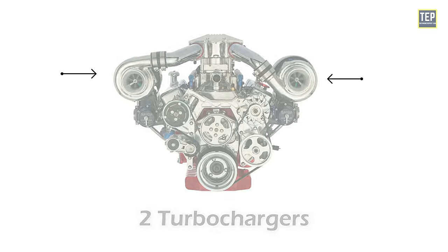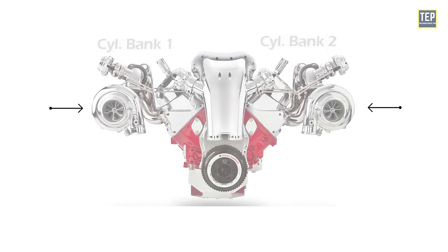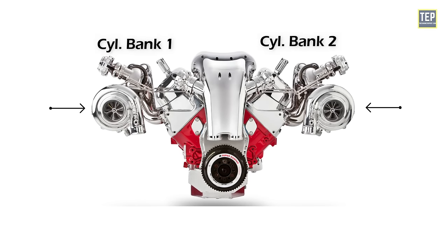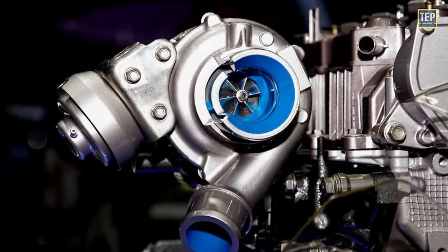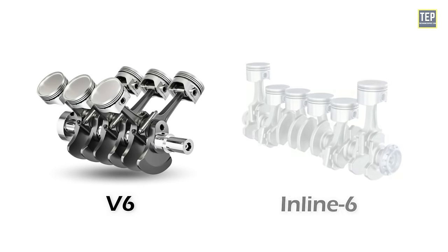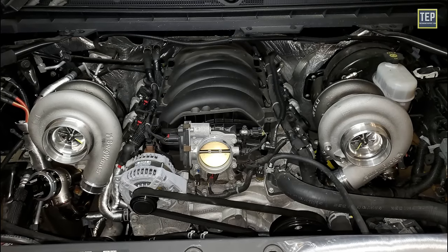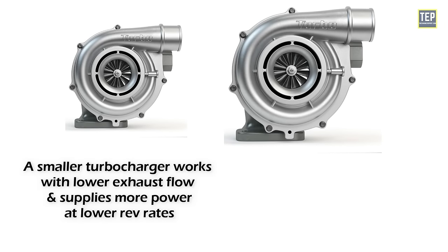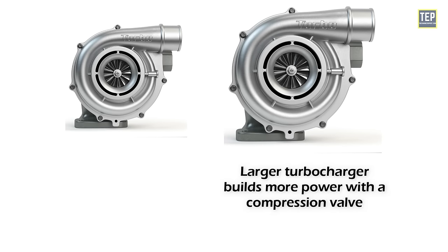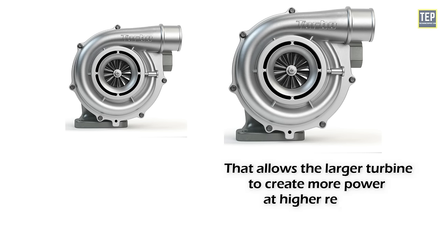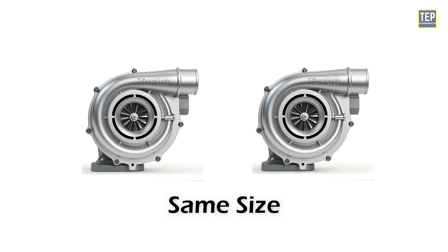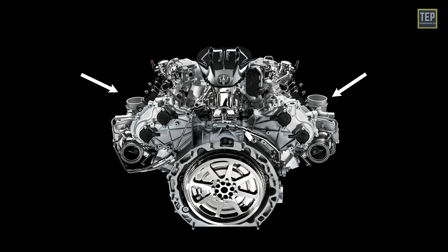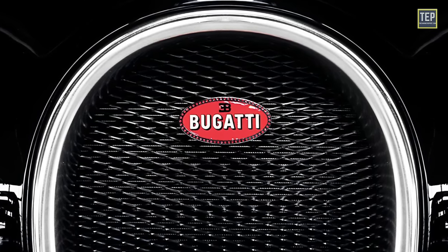Usually two turbochargers are used in V6, V8, or V12 engines, with one turbocharger for each bank of cylinders, providing packaging and efficiency advantages. A single turbocharger is sufficient for most four-cylinder engines, and is sometimes used in V6 and inline-six engines too. Twin turbo engine designs can use two turbochargers of different sizes: a smaller one works with lower exhaust flow supplying power at lower rev rates, while a second larger turbocharger builds more power at higher rev rates. The Biturbo uses two parallel turbochargers of the same size, each assigned to a single bank of the engine. Bugatti even used a setup with four sequential turbochargers on a W16 engine.